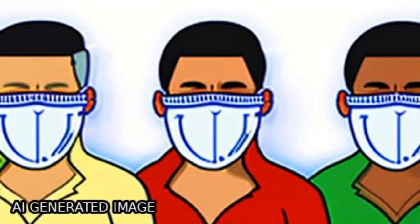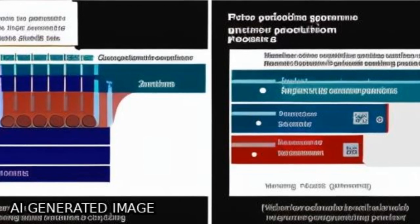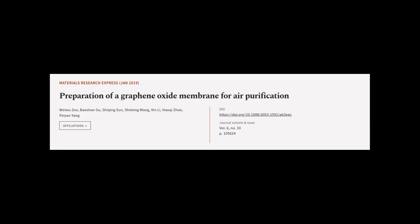The preparation of the GO membrane is a simple and pollution-free process that provides a new way to deal with air pollution. This article was offered by Wei Wu, Su Baoshan, Ji Yu, Chi Ching Sun, and others.